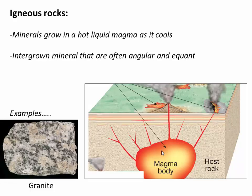Igneous rocks are rocks that grow in a hot magma as it cools. Minerals start to crystallize as the magma cools and they're free to grow relatively unrestricted. Because of that freedom to grow with no pressure or restriction, they tend to form into angular and equant mineral shapes that are nicely intergrown in a jigsaw texture. There's no fabric here and there are no minerals that are preferentially elongated — they tend to be equant in all different directions.